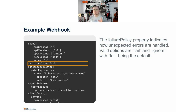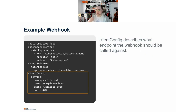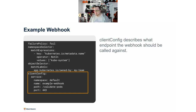You also set a failure policy: if the webhook fails with an error rather than returning a response — say it crashes — the webhook will block creation. You can set this to Ignore so that if the webhook code crashes, the controller lets it through anyway. Be careful: if the webhook is for security reasons you want this set to Fail; if it's more about best practices you may want Ignore to avoid blocking pod creation. Finally, the client config section tells Kubernetes where your webhook application lives — a Service name, namespace, port, and path.